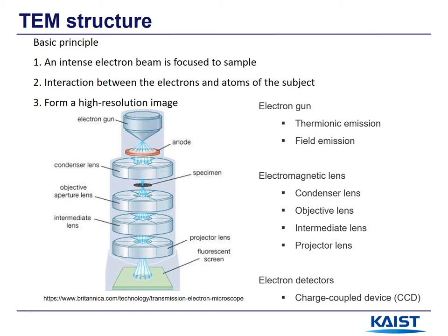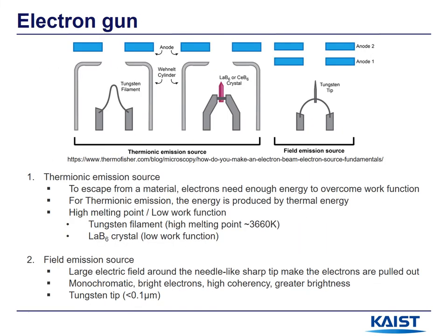I will explain the structure in three parts: electron gun, electromagnetic lens, and electron detectors. The first part is the electron gun. To escape from a material, electrons need energy larger than the work function of the material. In thermionic emission, this energy is produced by thermal energy. There are two big criteria for selecting a thermionic emission source: the material should have a high melting point so it is never melted by thermal energy, and it should have a low work function to make electrons escape easily.